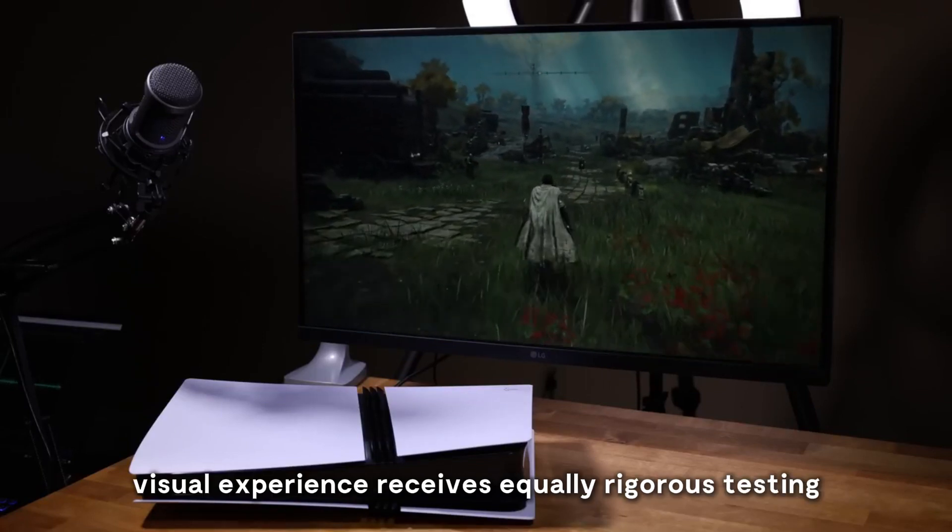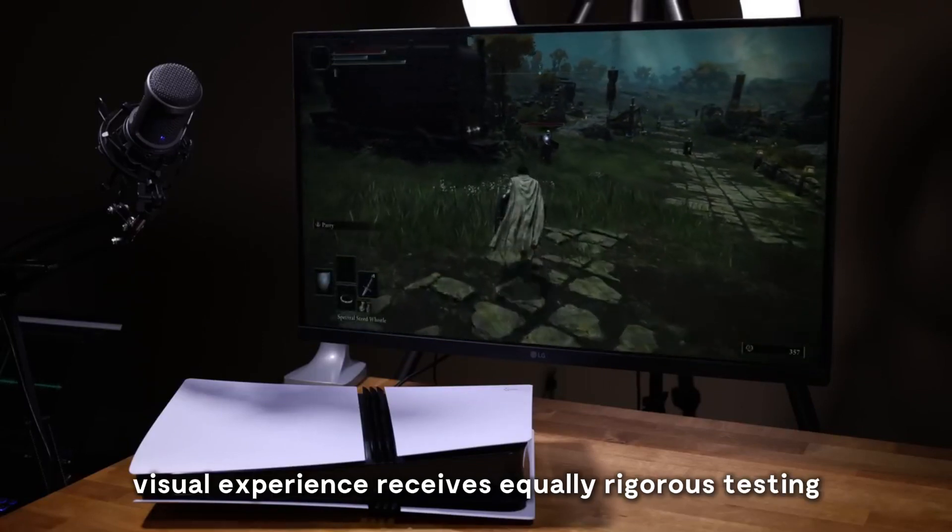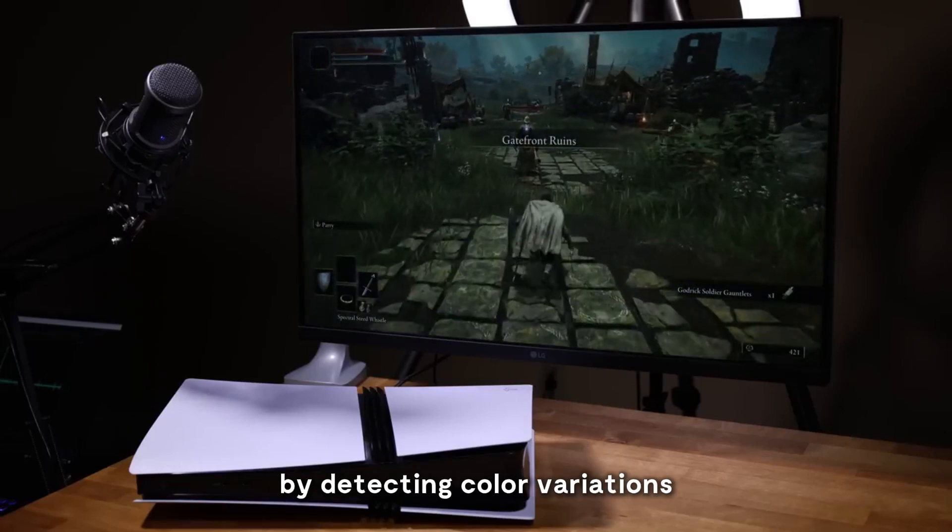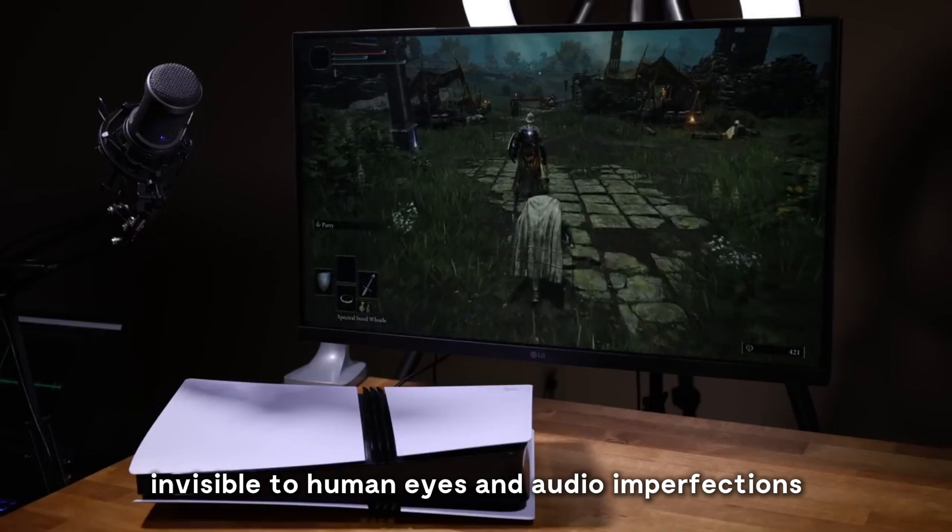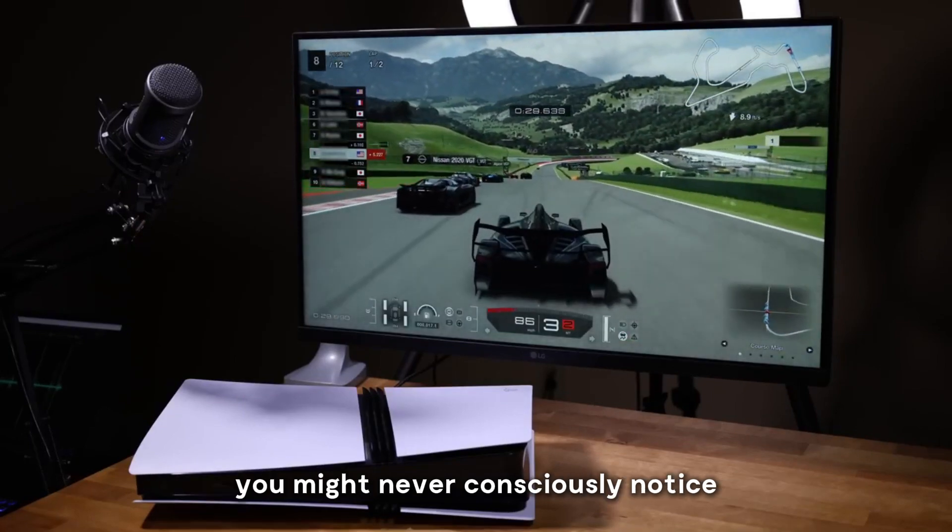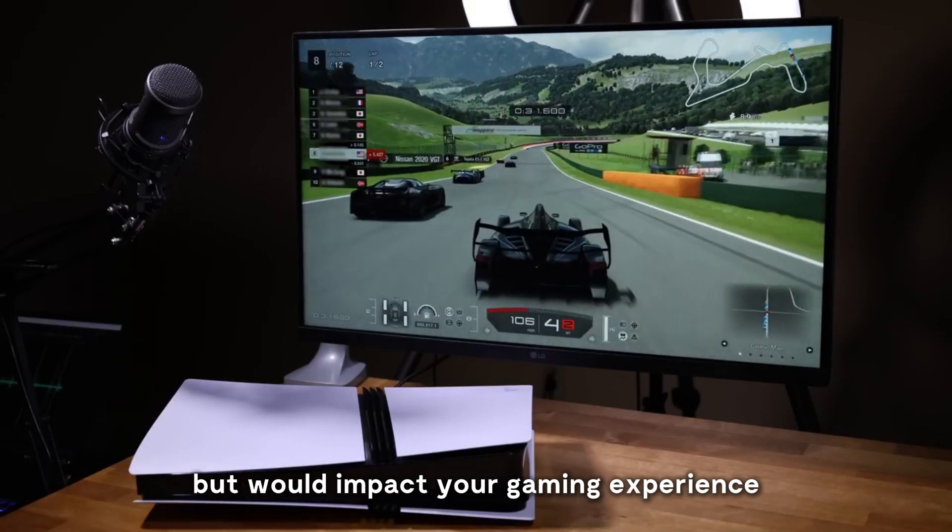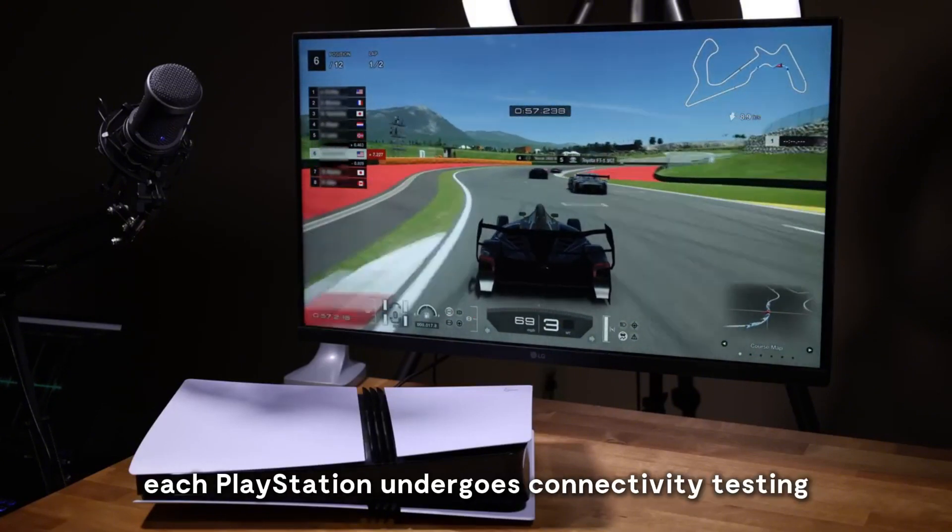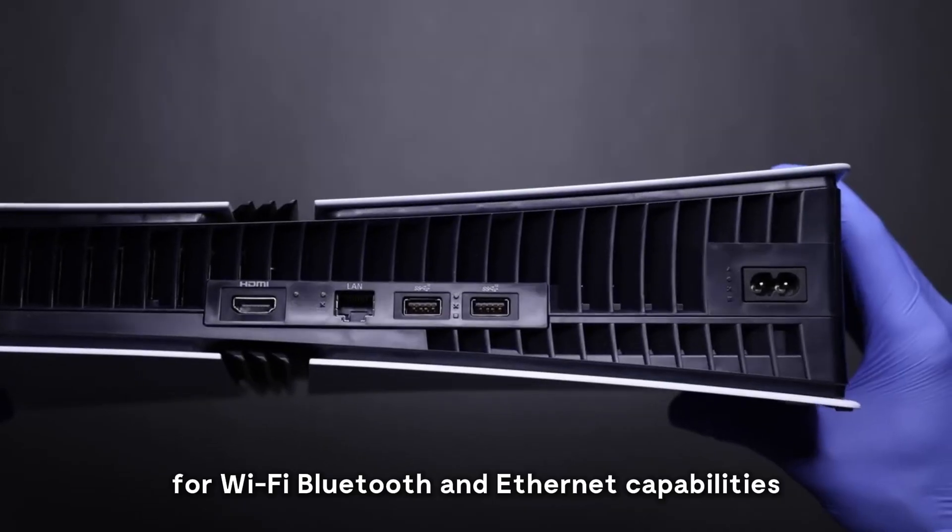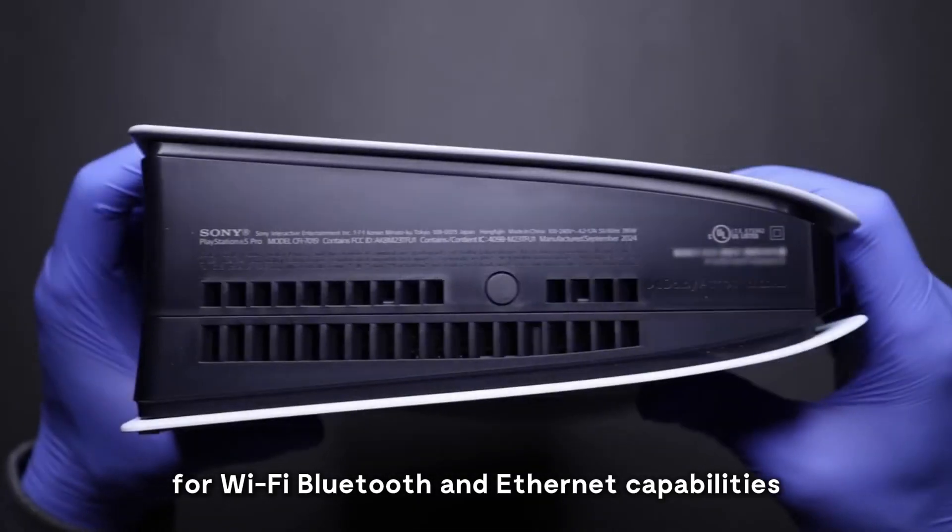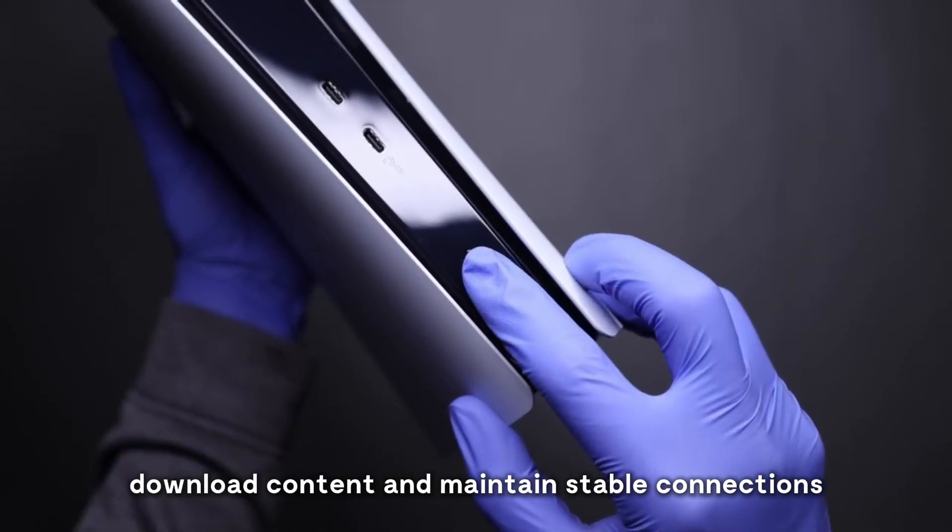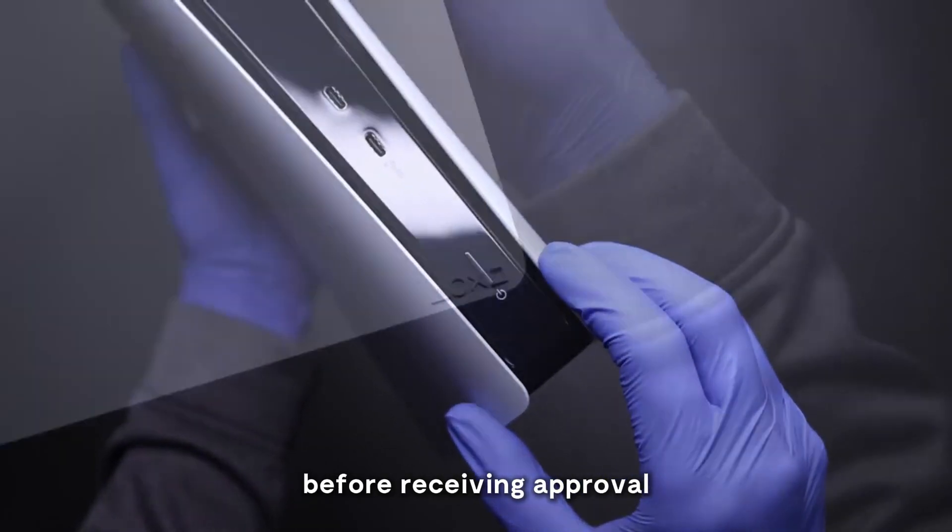The audio-visual experience receives equally rigorous testing. Specialized equipment verifies perfect sound and visuals by detecting color variations invisible to human eyes, and audio imperfections you might never consciously notice but would impact your gaming experience. In our connected gaming world, each PlayStation undergoes connectivity testing for Wi-Fi, Bluetooth and Ethernet capabilities. Units must successfully connect to test servers, download content, and maintain stable connections before receiving approval.